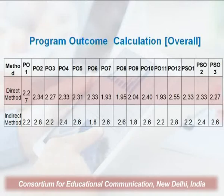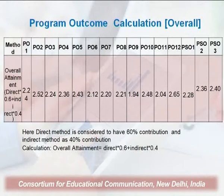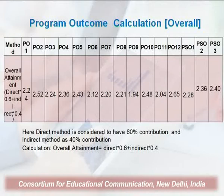The first row shows the direct method calculations and the bottom row shows the indirect method calculations, and the overall total result of the program outcome calculations is done in a particular manner. The direct method is considered to have 60 percent contribution and the indirect method is considered to have a 40 percent contribution. The overall attainment calculation is: 0.6 × direct + 0.4 × indirect.